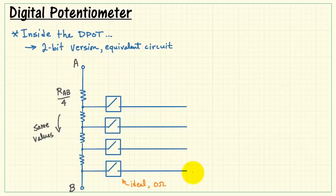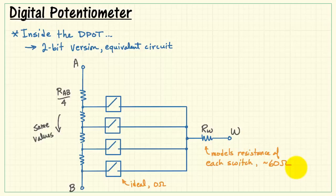Next, I have an array of four ideal switches, each with zero ohms resistance. Now each switch, in fact, has about 60 ohms, and I'm summarizing that with this single resistor right here, called R sub W.